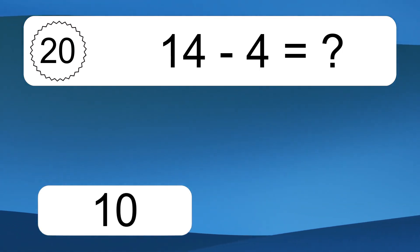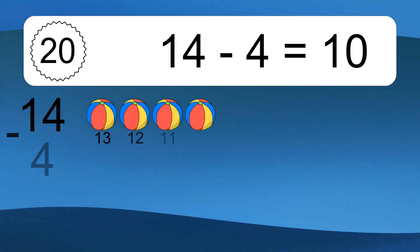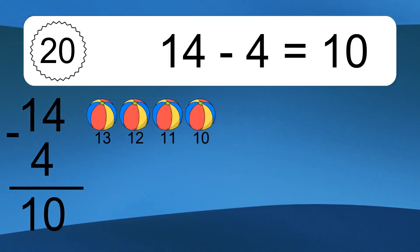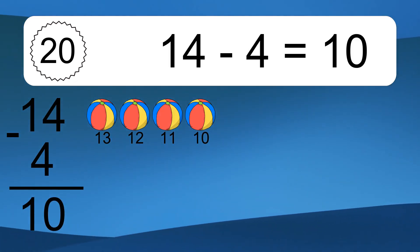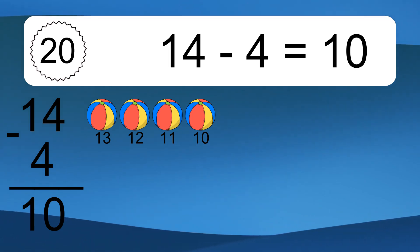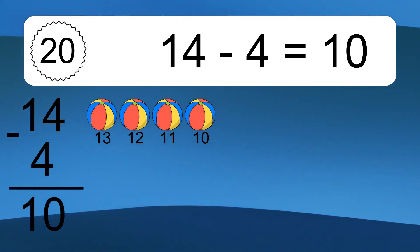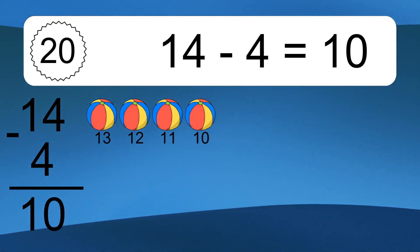14 minus 4 equals what? 14 minus 4 equals 10. Let's count it. 13, 12, 11, 10.